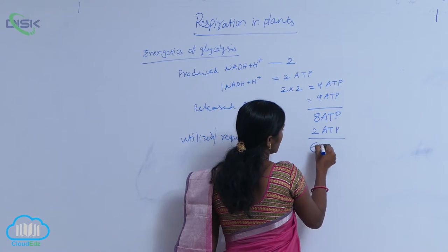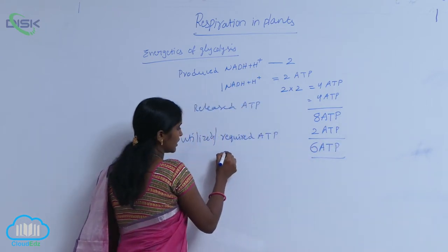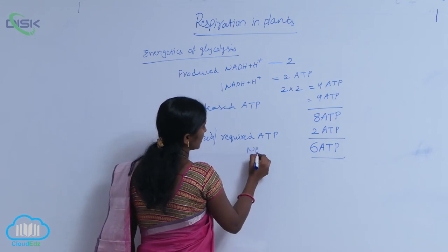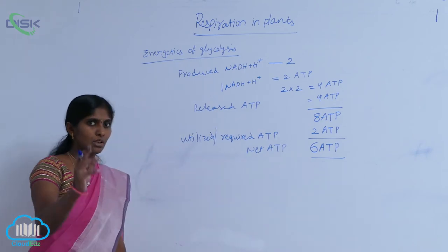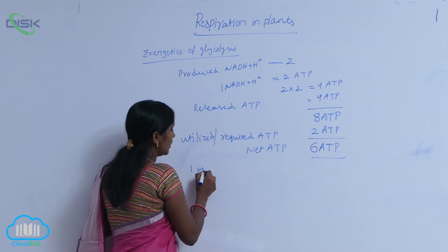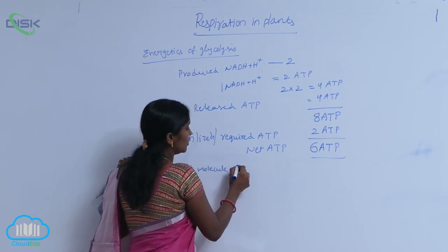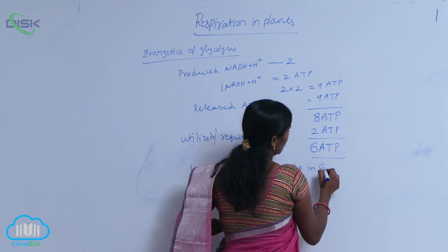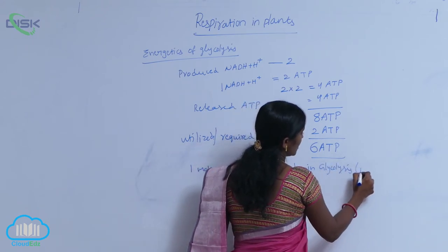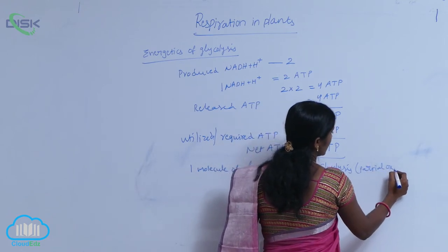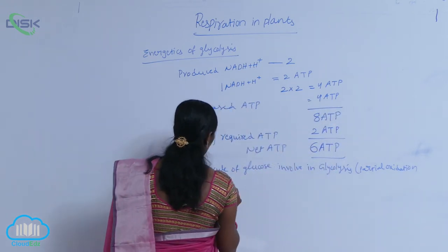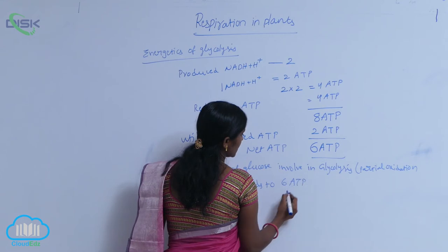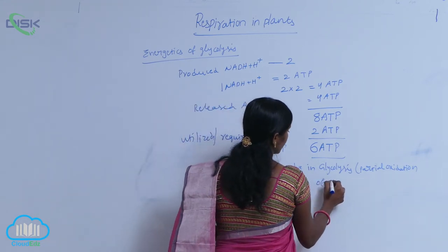So what are the net ATPs? Six ATPs are the net ATPs — net gain. So one molecule of glucose involved in glycolysis or partial oxidation yields six ATPs of energy.